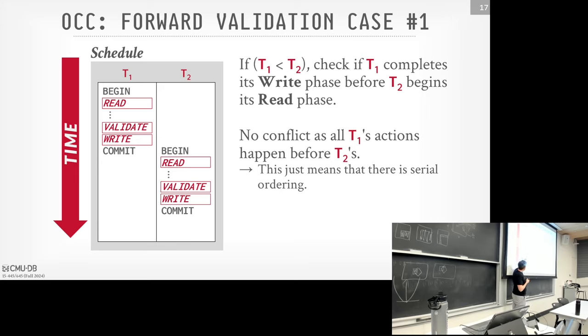For both OCC and 2PL, we made a big assumption that the database would be fixed size — meaning transactions only read or update things that already exist. But obviously in a real database system we have to support inserts, deletes, and updates. When we allow the size of the database to be dynamic, this introduces additional problems that OCC and 2PL by themselves aren't going to be able to handle.